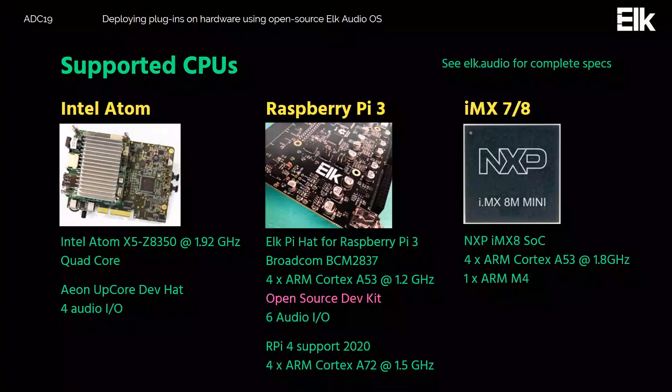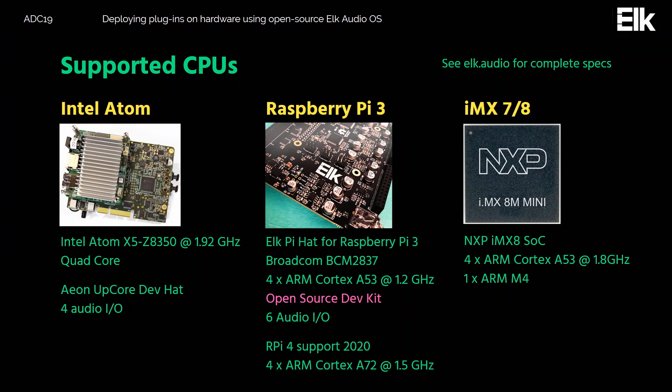Currently supported CPUs include several versions of the Intel Atom, Raspberry Pi 3B and 3B+, which is what we developed the Elk Pi for. Raspberry Pi 4 support is coming in the first quarter of next year, and we also have support for the i.MX 7 and 8 system-on-chip systems.